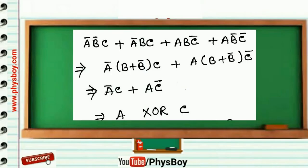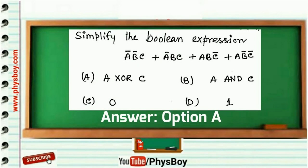So the correct answer is option A, that is A XOR C.